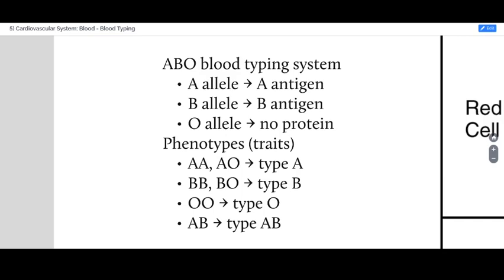The same goes for type B — you can get two copies of the B allele, or you can get one copy of the B allele and one copy of the recessive O allele to result in type B blood. Type AB blood is when you get the A allele from one parent and the B allele from the other parent, so you have both of those traits — both antigens are made in the body. And the recessive trait, type O, is when you get the O allele from both parents, so you have absolutely no functional ABO alleles to make any protein, and it's the lack of those proteins that results in the recessive phenotype.